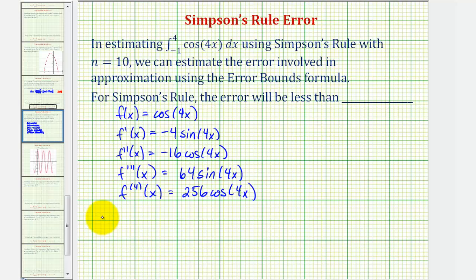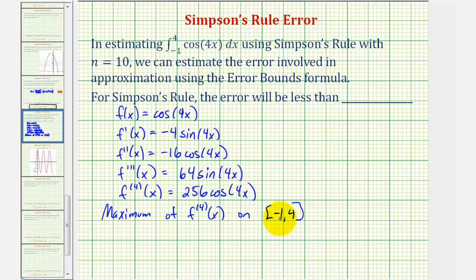Our goal is to find the maximum function value of the fourth derivative function on the closed interval from negative one to four. We should recognize that the graph of our fourth derivative function has an amplitude of two hundred fifty-six, which means the maximum function value would be two hundred fifty-six. Let's verify this graphically.